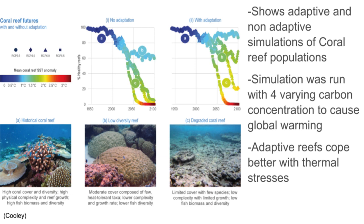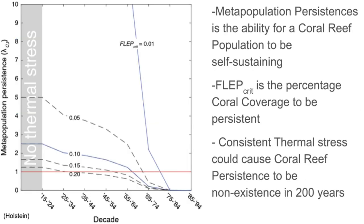With the lowest emissions scenario, however, coral reefs can stay about 60% healthy by 2100 with no adaptations, and stay 90% healthy by 2100 with adaptations. A second method is metapopulation persistence, which is the ability for a coral reef population to be self-sustaining. This is based off of coral reef coverage, or the amount of coral reef that can be self-sustaining. These different lines show different amounts of coral reef coverage needed to be self-sustaining, with the rightmost line being only 1% of coral coverage causing self-sustaining coral reefs, and the leftmost line being 20% coral reef coverage being self-sustaining. The biggest thing to note is the red line, because once one of those lines crosses the red line, they cannot self-sustain naturally.